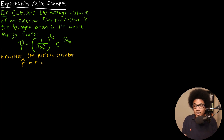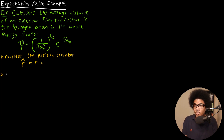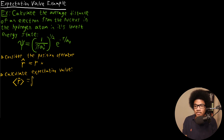Now I want to calculate an expectation value based on this operator, because calculating the expectation value of the position operator gives us the average position — the average distance of this electron from the nucleus. So we want to calculate the expectation value. We use that notation and evaluate the integral of Psi-star times R times Psi d-tau, integrating over all space.